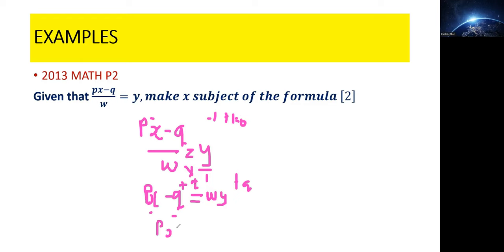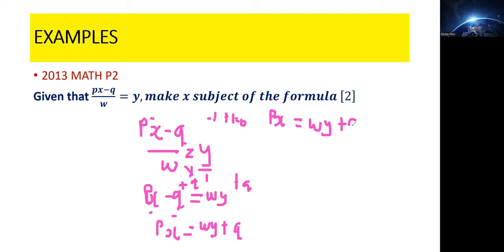This side will remain with px, which equals wy plus q. Now that we've come this far, the next step is to get rid of p. To do that, you multiply both sides of the equation by the multiplicative inverse of p — that is, one over p. The multiplicative inverse is the number which, when multiplied by another, gives a product of one.